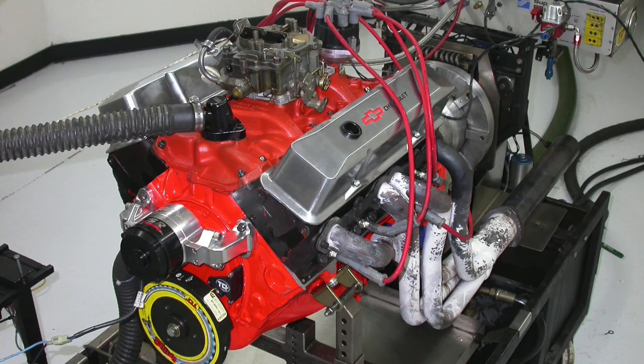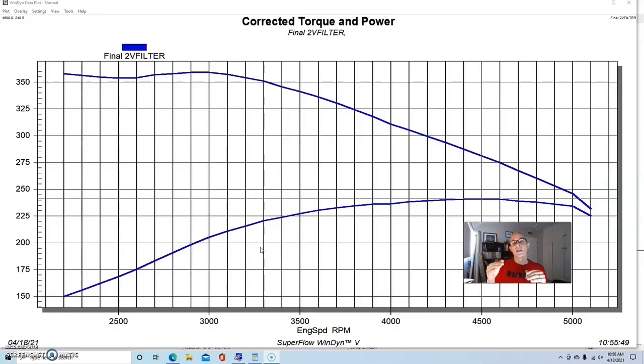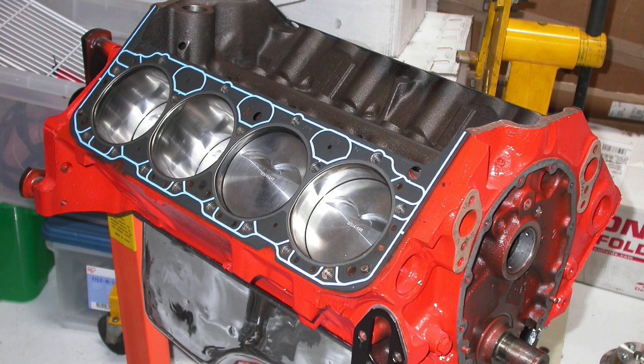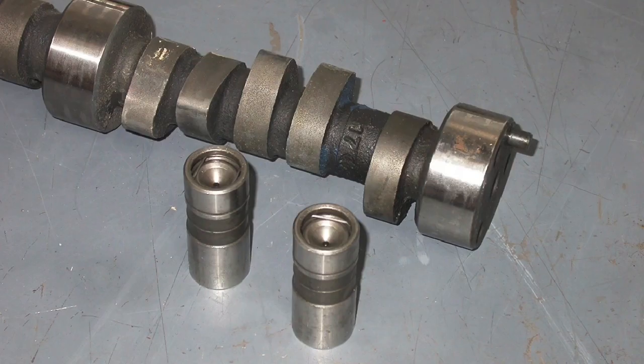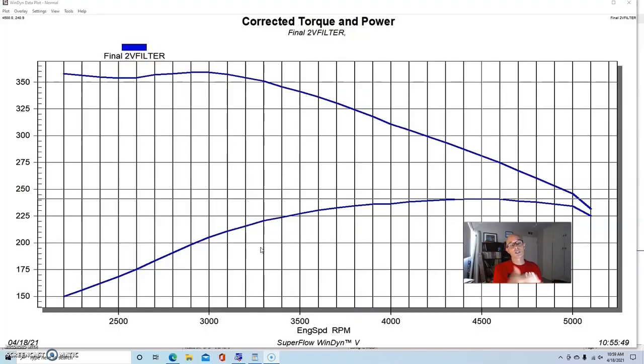To get things started, let's take a look at our small block Chevy. And it needs to be known that our small block Chevy was not actually a junkyard motor. It did start out that way, but it was rebuilt. And the reason that we rebuilt it and put forged rods and more importantly, forged pistons in it with valve reliefs is because we were eventually going to install ported heads and a big camshaft and a big intake manifold to make lots of power.